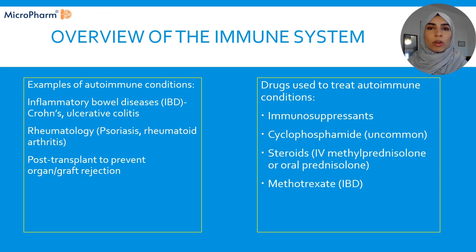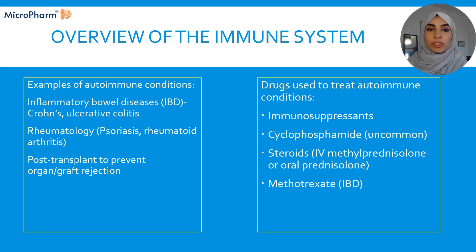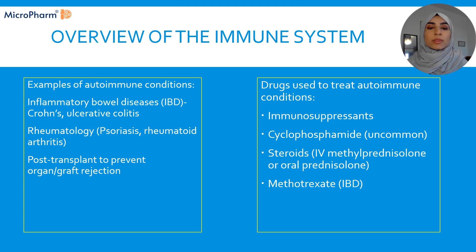Let's have a quick overview of the BNF's immune system — not the biological immune system. If you're thinking of infections and that kind of immune system, that's a whole different chapter. With this part of the BNF, we're looking more at autoimmune conditions, where the body overreacts to its own immune system, which leads to different conditions. I've listed a few of the common ones covered in the BNF that are most related to the medication we're going to talk about.